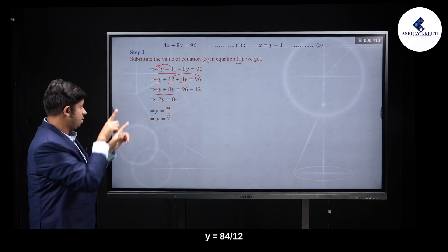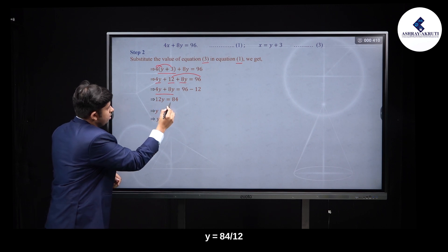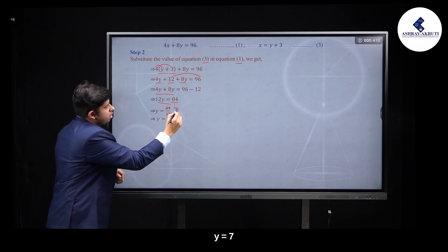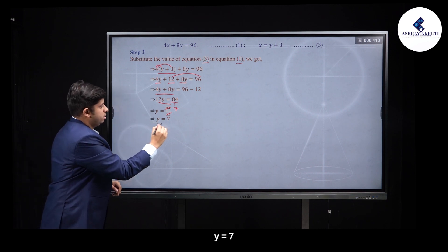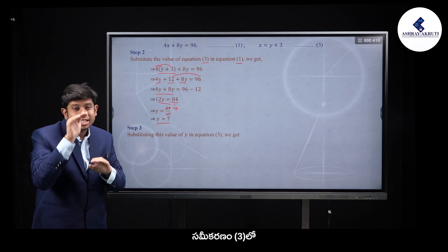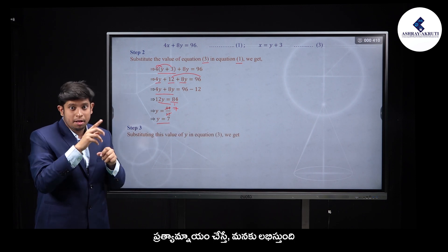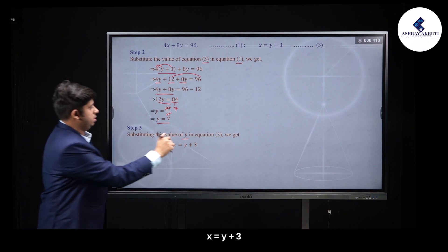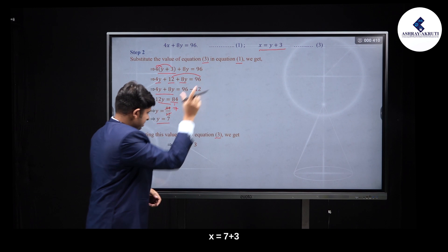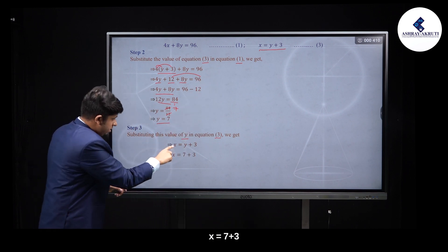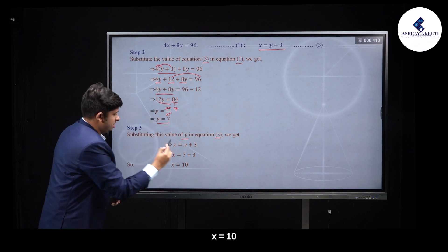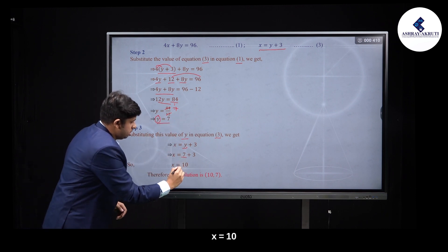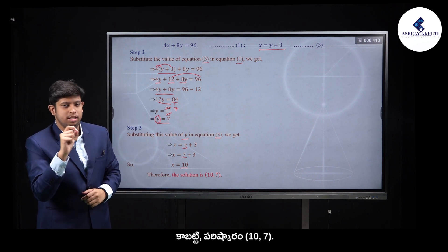y is equal to 84 by 12. Finally y is equal to 7. Third step: substitute y = 7 into equation 3: x is equal to y plus 3, which gives 7 plus 3 equals 10. So x is equal to 10. Therefore the solution is x = 10, y = 7.